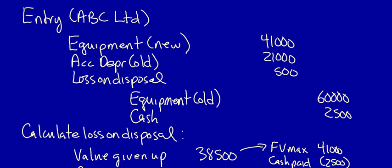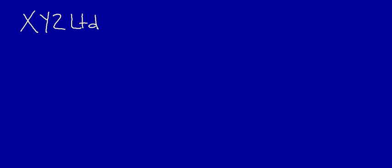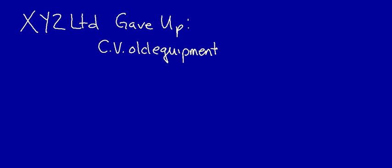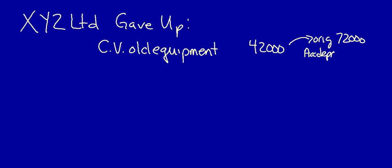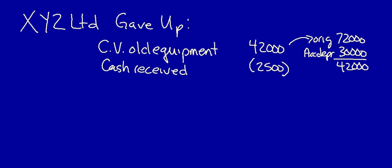Let's move on to XYZ Limited, no commercial substance. What did they give up? Because it has no commercial substance, we use the carrying value of the old equipment, which equals $42,000, calculated as original cost of $72,000 less accumulated depreciation of $30,000. We then deduct the cash received of $2,500. Why? Because XYZ didn't have to give up $42,000 — they got $2,500 back. So in reality, they only gave up $39,500 net, and this is what we should record the new asset at.